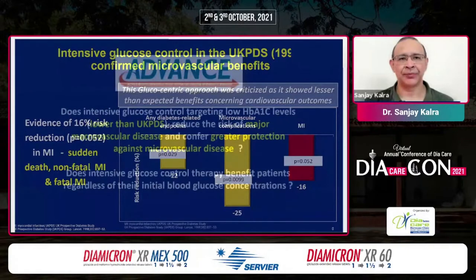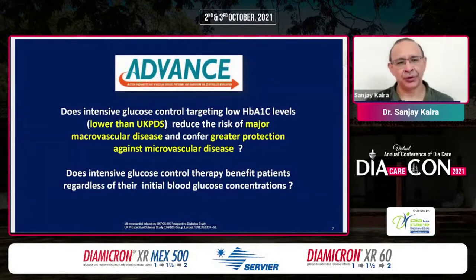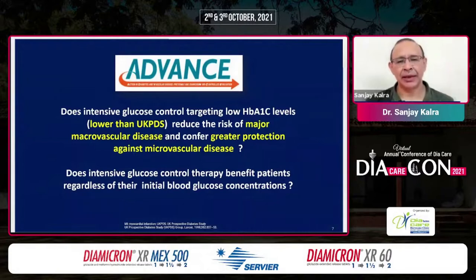After UKPDS, there was increased interest. ADVANCE asked whether we could reduce the risk of macrovascular disease by targeting a low HbA1c, even lower than what UKPDS was doing, in a safe manner. Could glucose control be both strong and safe? And was there a threshold? Could we bring HbA1c down as low as possible, regardless of initial glucose levels, and still achieve benefit?